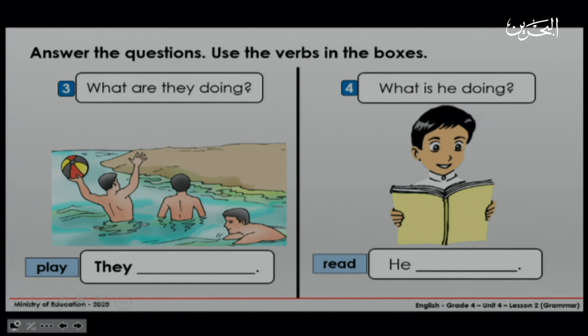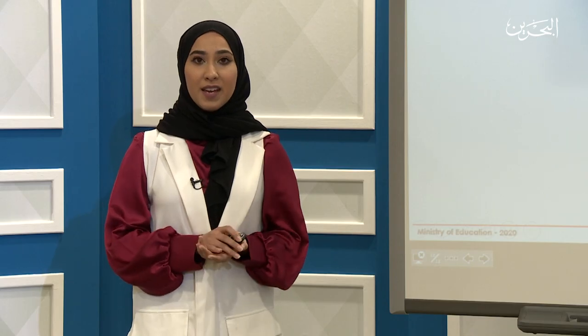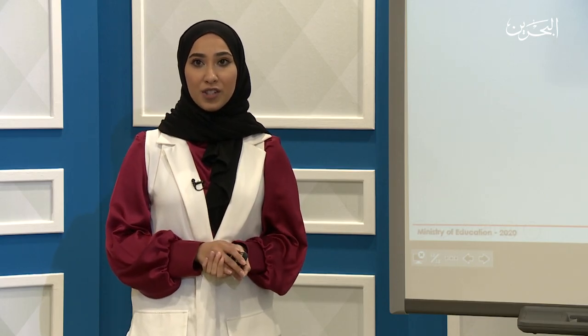Now let's check our answers. Number three: what are they doing? We have the verb 'play' — they are playing. Let's see number four: what is he doing? We have the verb 'read' — he is reading. This was the end of our lesson. Thank you for watching.